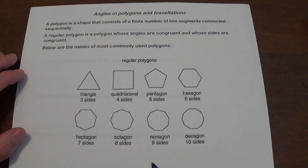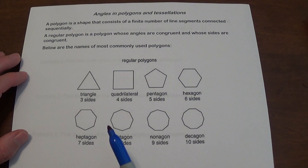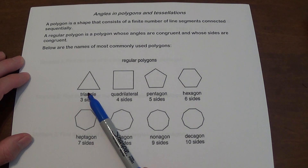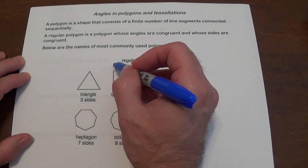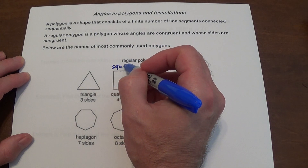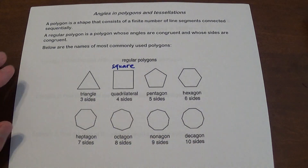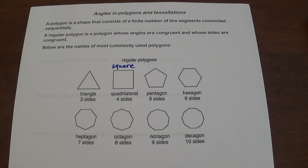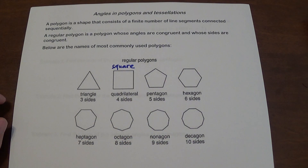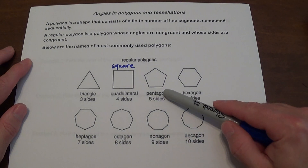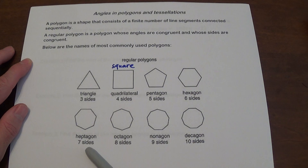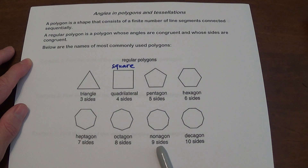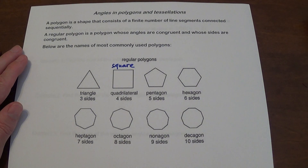A few regular polygons that you know are named as follows: we have a triangle, a quadrilateral — a regular quadrilateral is called a square, but a general arbitrary four-sided polygon is called a quadrilateral. We have a pentagon with five sides, a hexagon with six sides, a heptagon with seven sides, an octagon with eight sides, a nonagon with nine sides, and a decagon with ten sides.